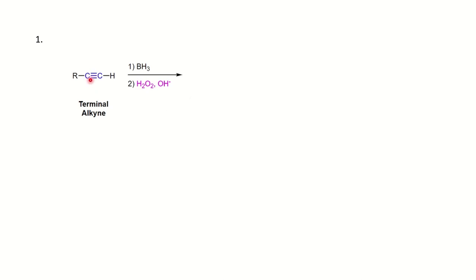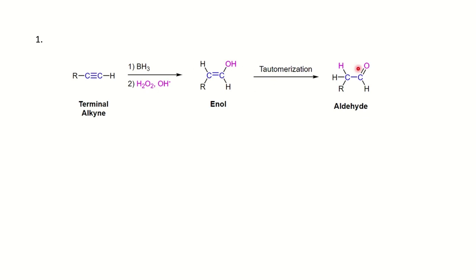With a terminal alkyne and the same BH3 reagent: BH3 adds to the triple bond following Markovnikov's rule — hydrogen adds to the substituted carbon, and syn addition takes place. The oxidizing agent then converts BH2 into OH. Since the product is an enol, tautomerization occurs and it converts into an aldehyde. So terminal alkynes are converted into aldehydes.